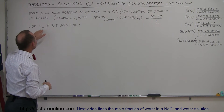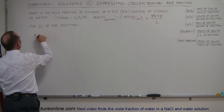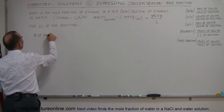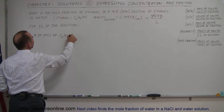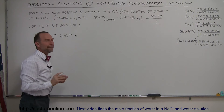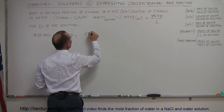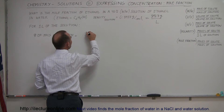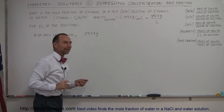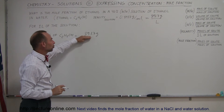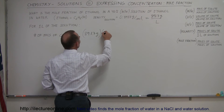Let's assume we have one liter of the solution. We want to find the number of moles of ethanol, C2H5OH. That is equal to the mass in a one-liter solution, so that would be 893.7 grams — that's the mass of the whole solution, one liter. Since only 40% of that is ethanol, we have to multiply that times 40%.